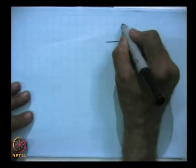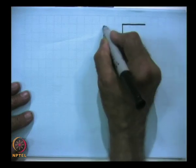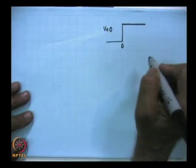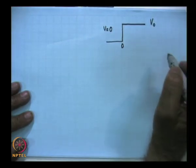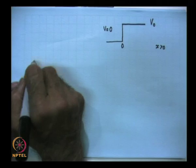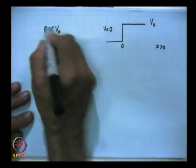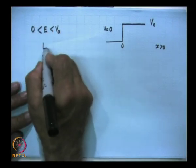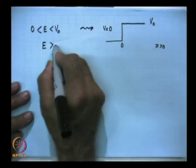In our last lecture, we discussed the case when an electron approached a potential step and we were calculating the reflection and transmission of that electron wave. We considered a potential step such that the potential is 0 for x less than 0 and equal to V₀ for x greater than 0. There are two cases: one in which E is less than V₀, and the other where the energy of the incident particle is greater than V₀.